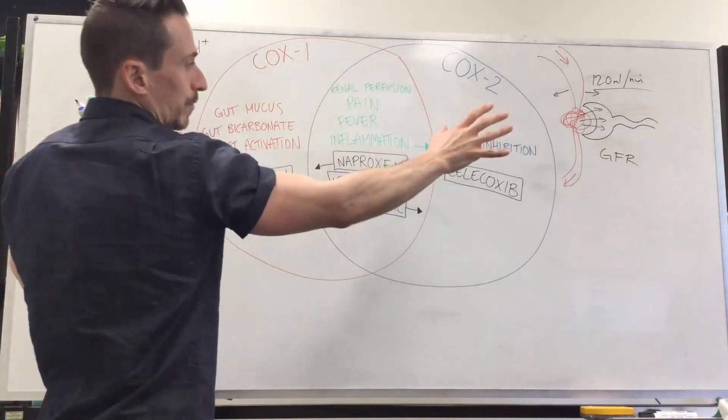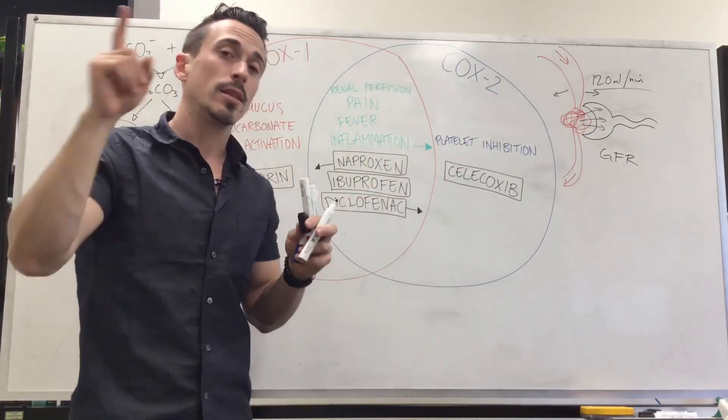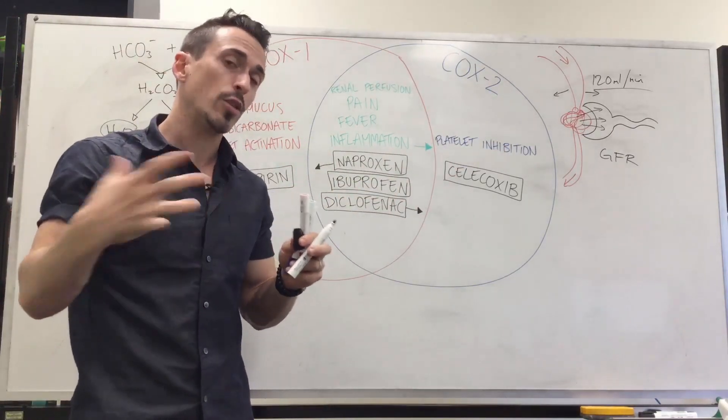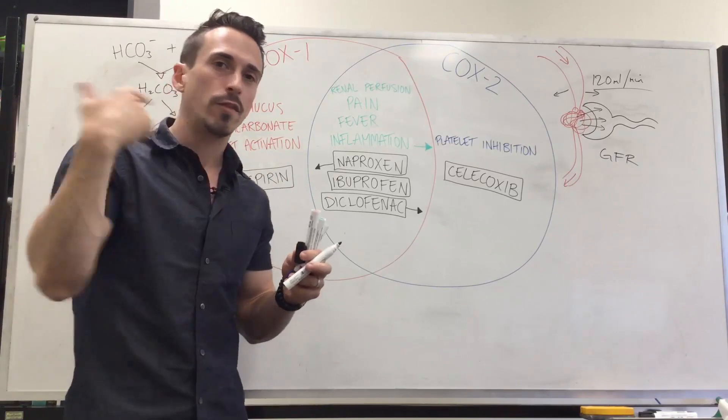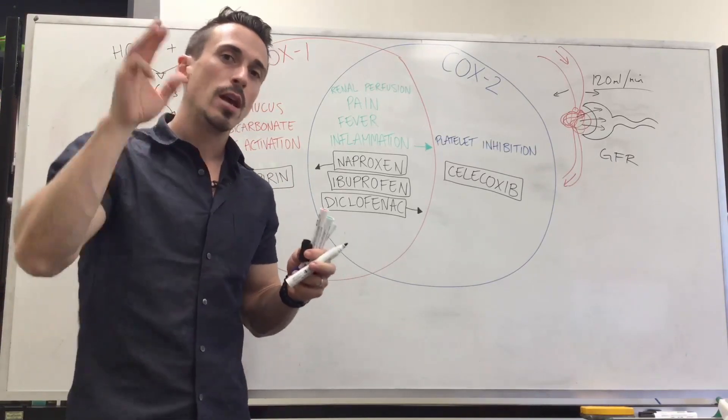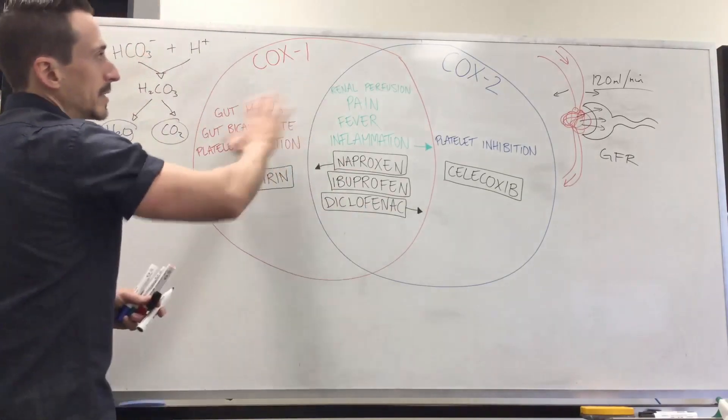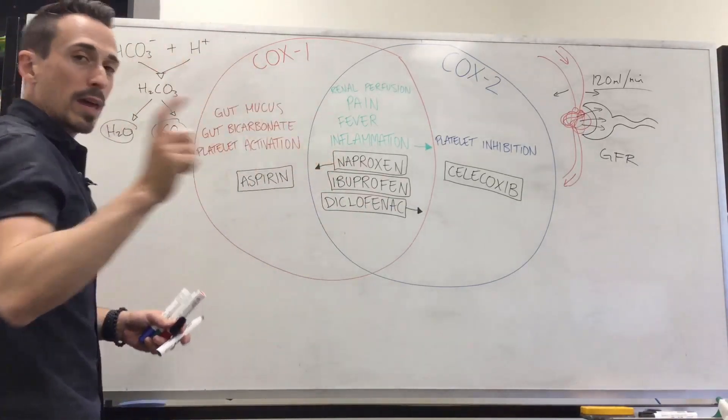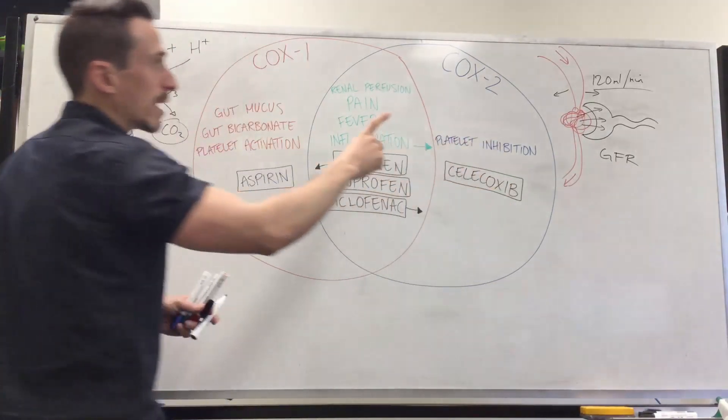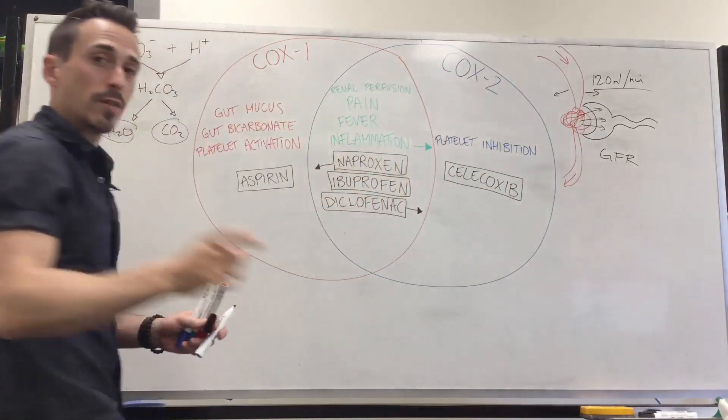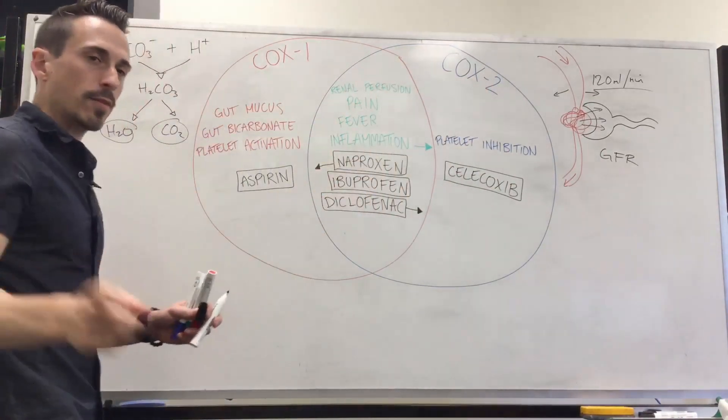So now that we know what they do, we need to talk about the drugs that we use to stop these prostaglandins. So effectively, aspirin, ibuprofen, celecoxib, Voltaren, they all play a role in stopping prostaglandins, stopping these effects. Now what I've done is I've highlighted where these particular drugs sit in regards to whether they're COX-1 specific, COX-2 specific, or non-specific. So let's have a look.